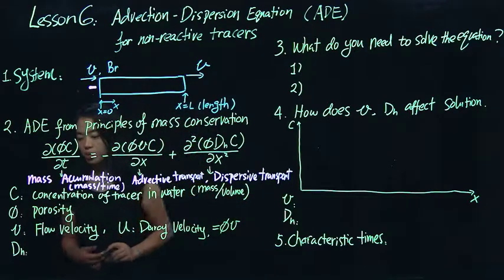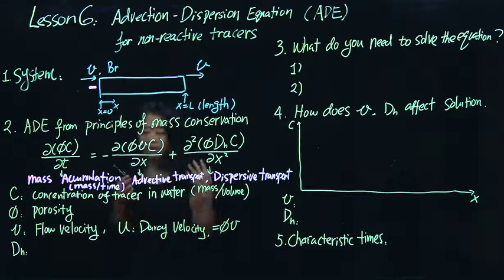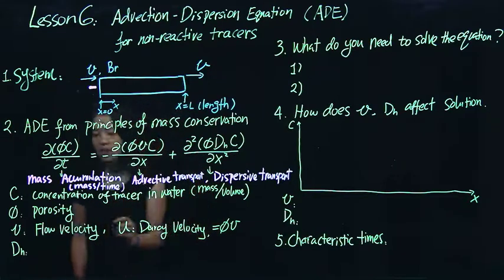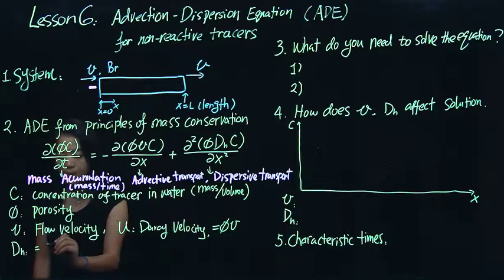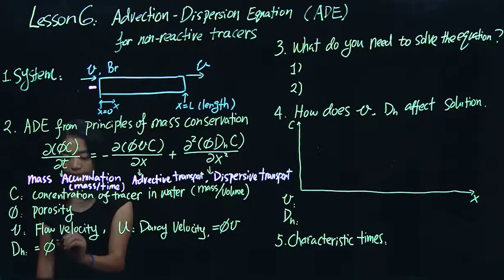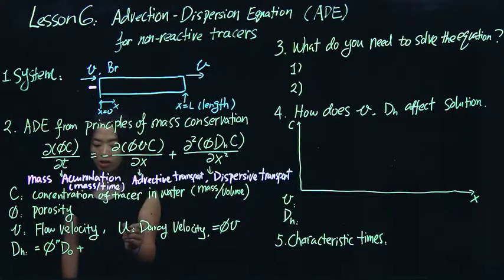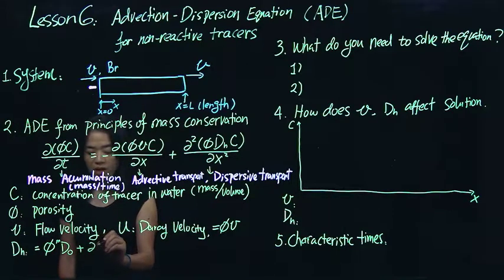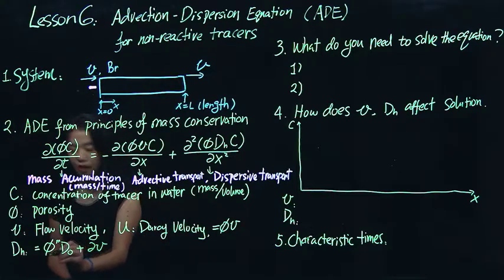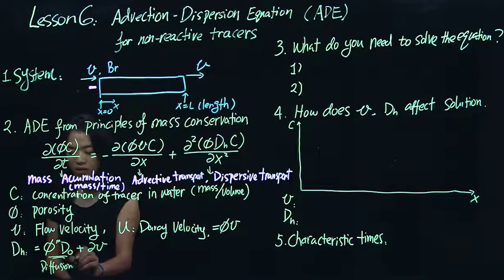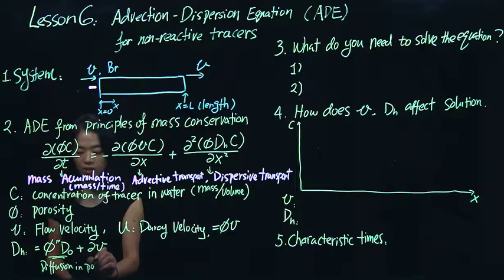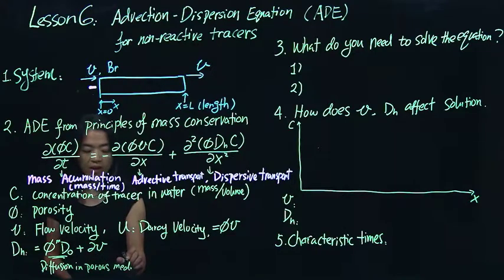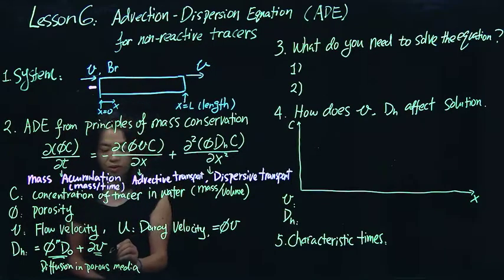So that's the relationship between the two. And this Dh is a very important term for this dispersive transport. This will be equal to, I talked about it, could be coming both from diffusion and the mechanical dispersion in porous media. So we have this kind of two terms adding together. Because this is coming from diffusion in porous media, diffusion coefficient in porous media.